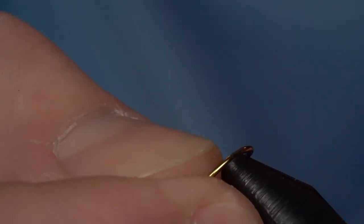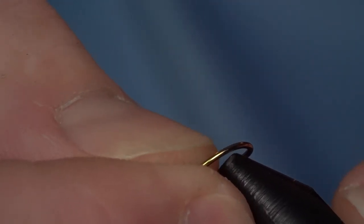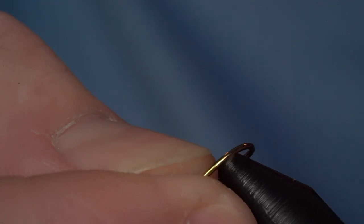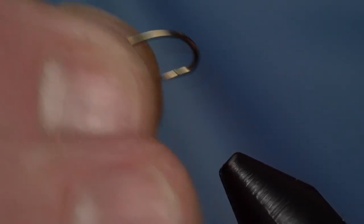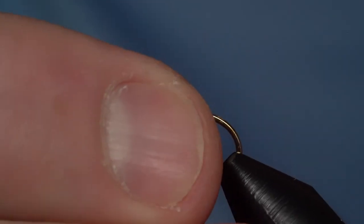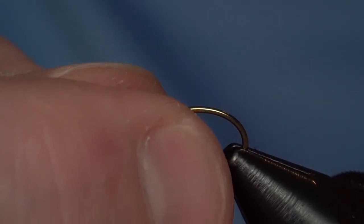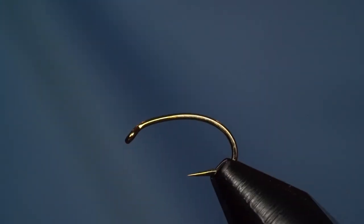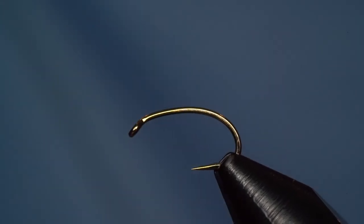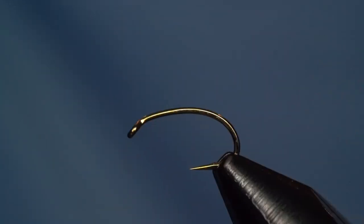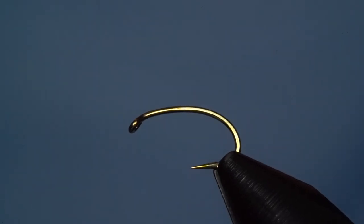We're starting on a Fulyan Mill hook, their heavyweight grub, model number FM 1165. It's a nice heavy wire curved shank down eye hook, offset a little bit to help improve your hookups, which is a nice aspect in any hook.